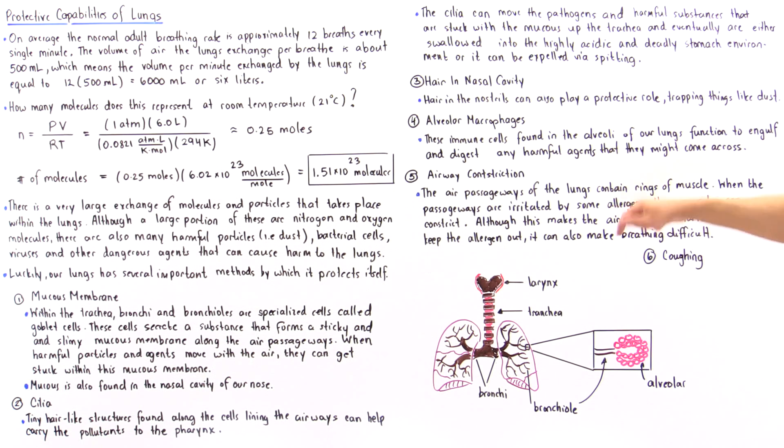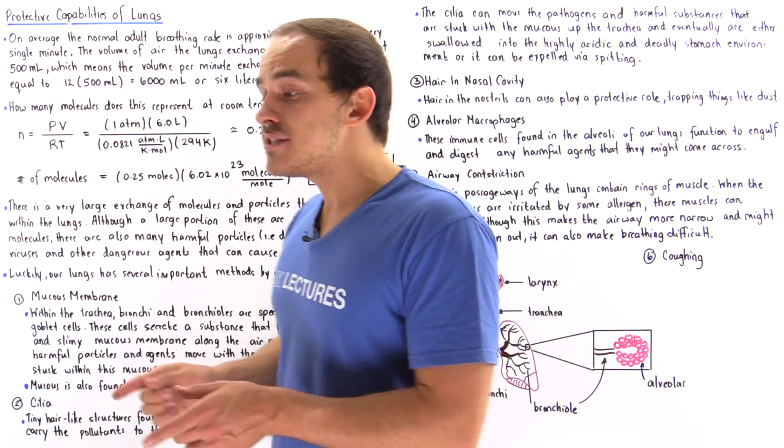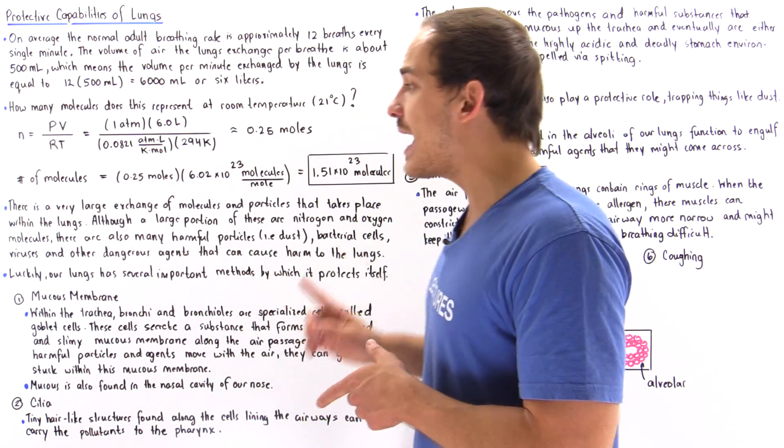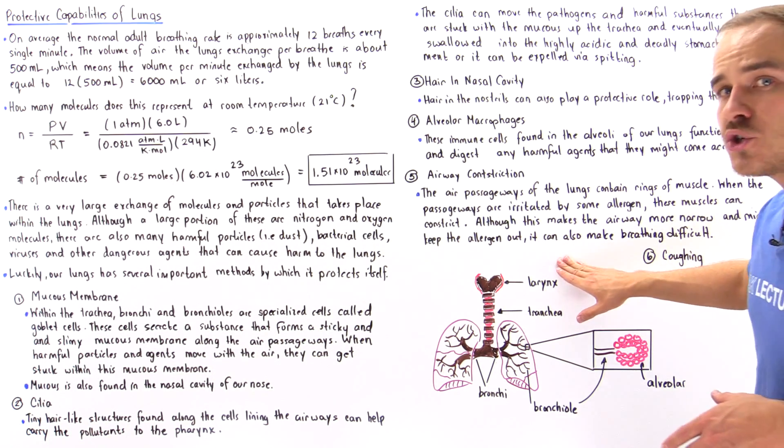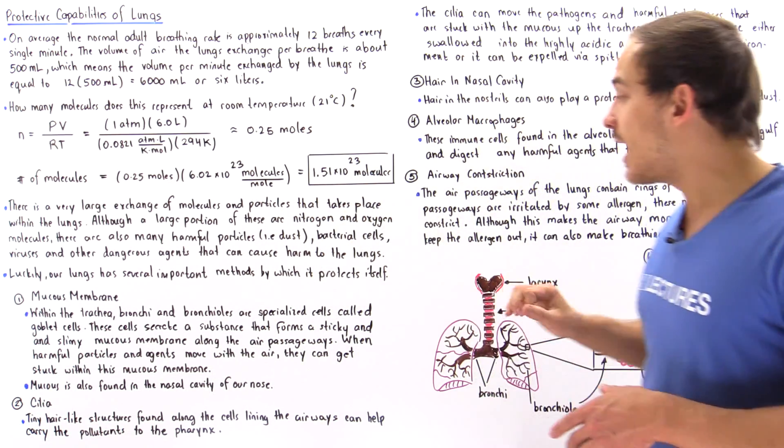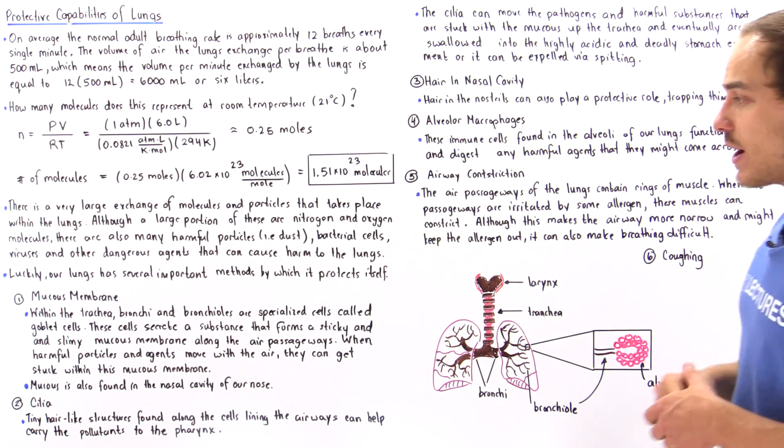The air passageways of the lungs contain rings of muscle. When the passageways are irritated by, let's say, some type of allergen, these muscles can constrict. Although this does make the airway more narrow and decreases the likelihood that a pathogen will end up in our lungs and body, specifically in the alveoli, it also has a bad effect because if we constrict our passageways, that will make it very difficult for us to actually breathe.